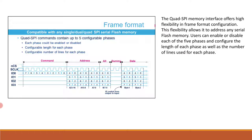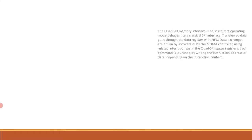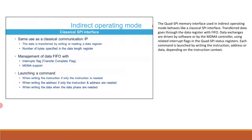In indirect operating mode, the Quad SPI memory interface behaves like a classical SPI interface. Transferred data goes through the data register with the FIFO. Data exchanges are driven by software or by the MDMA controller using related interrupt flags in the Quad SPI status registers. Each command is launched by writing the instruction, address, or data depending on the instruction context.